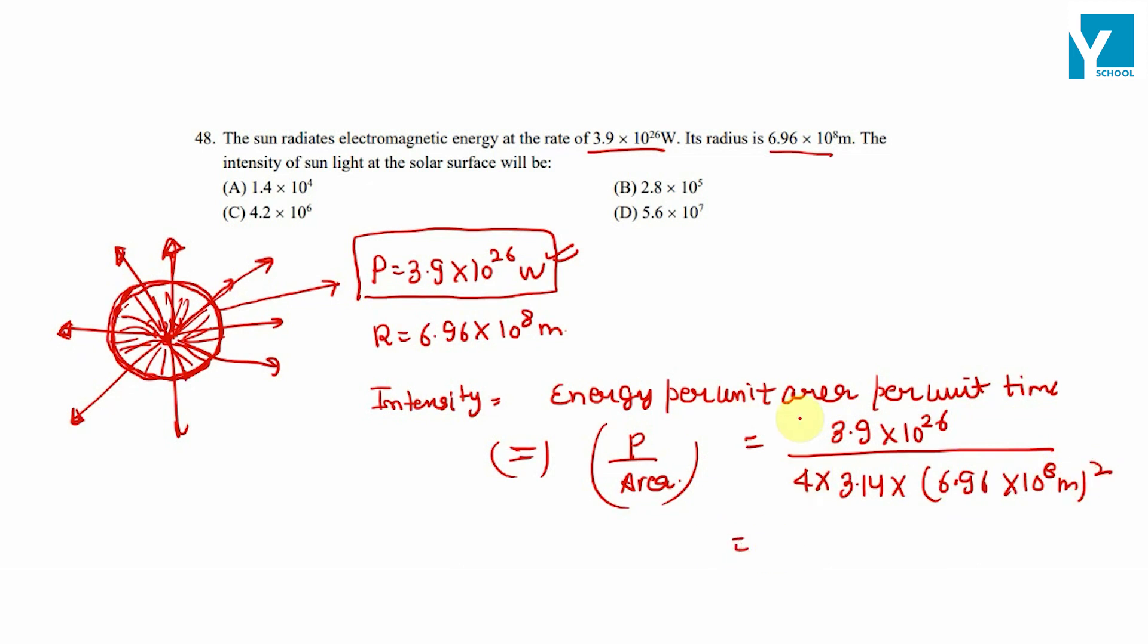So in this calculation, we will get the answer to be 5.6 × 10^7 watts per square meter. So the solar surface will have this intensity. So option D is the right answer.